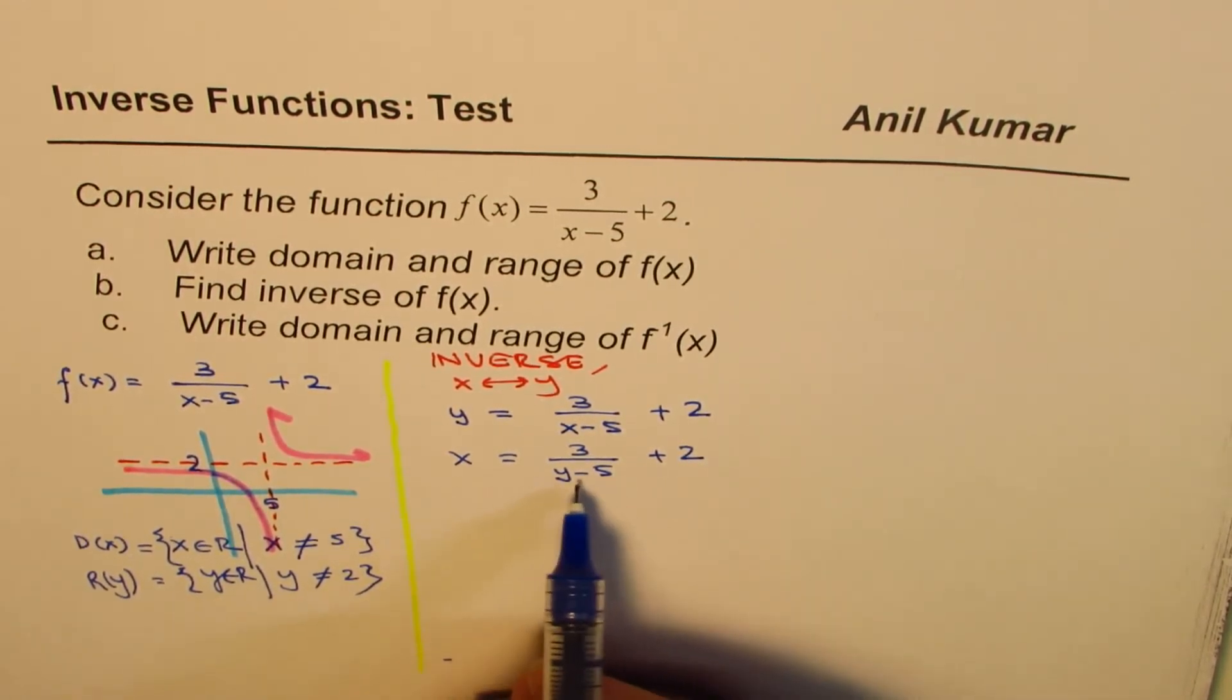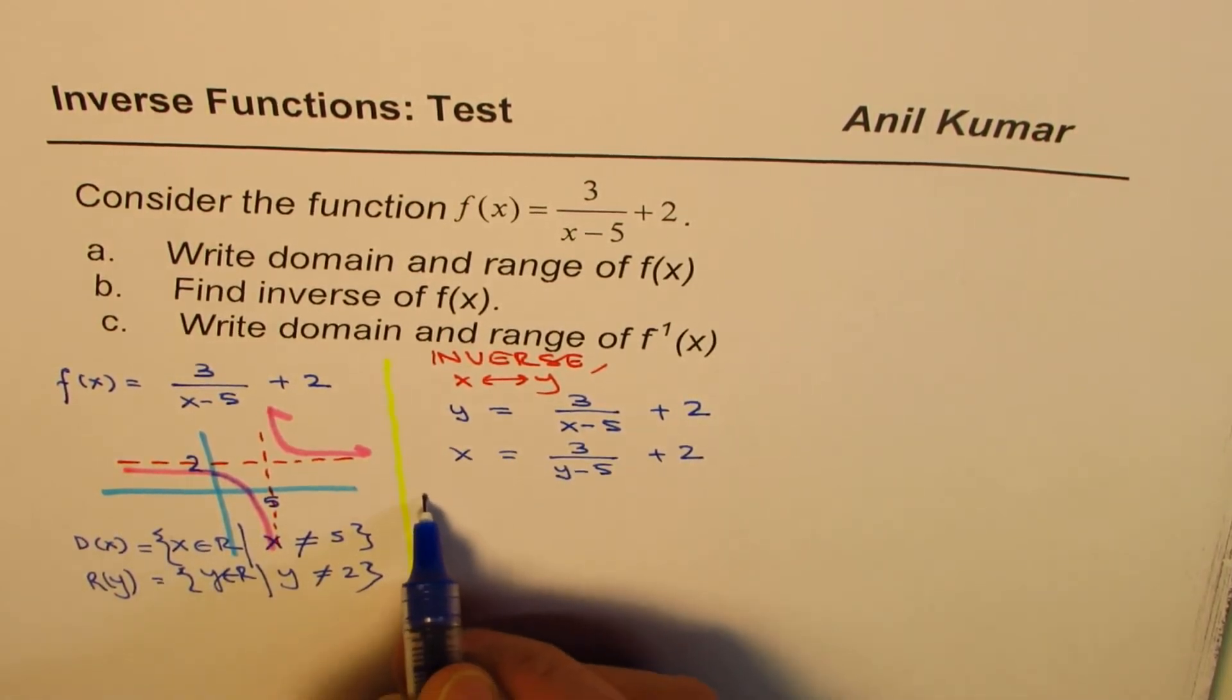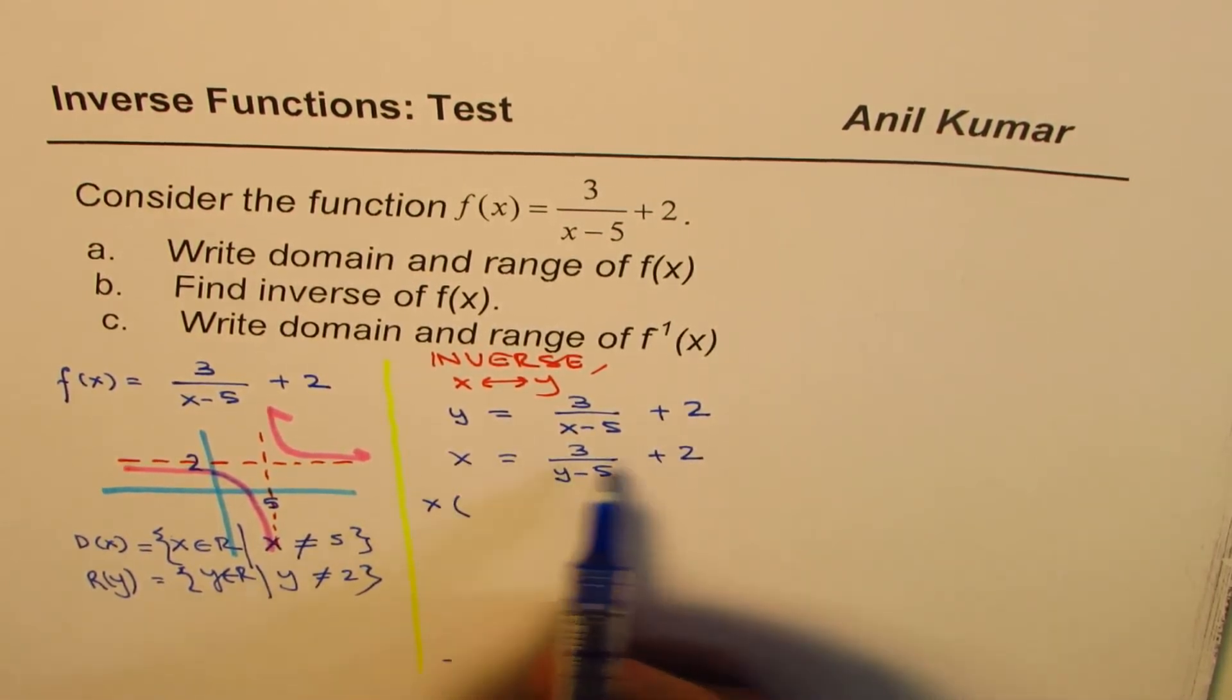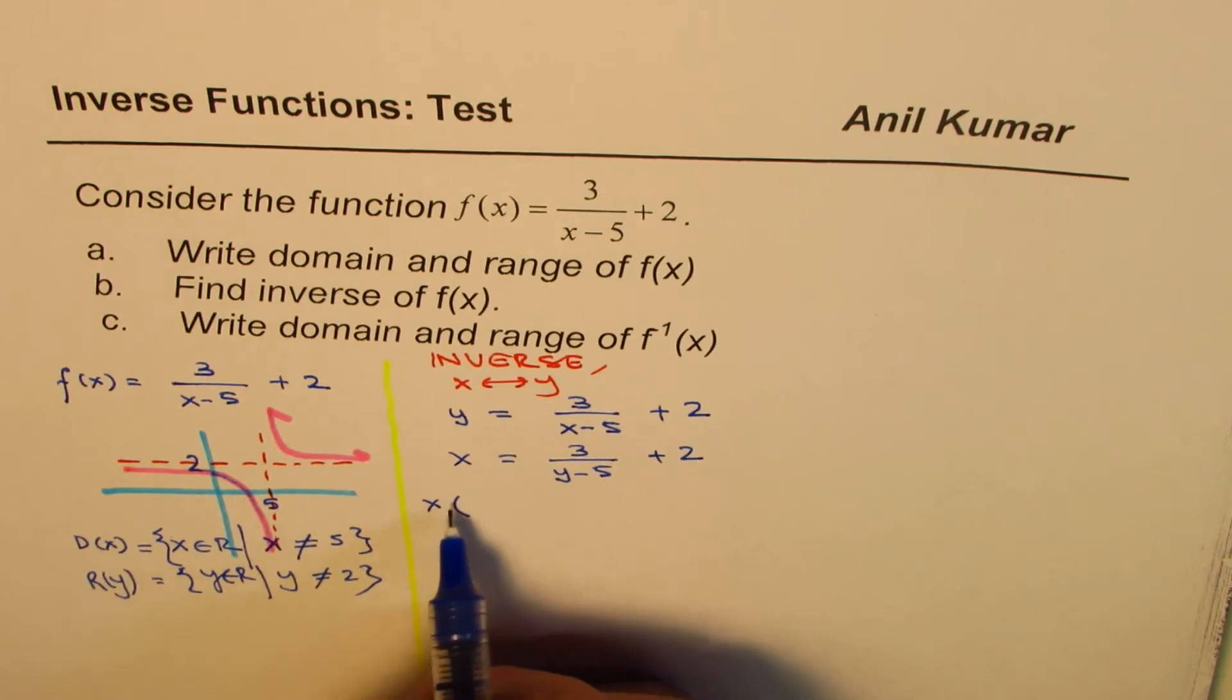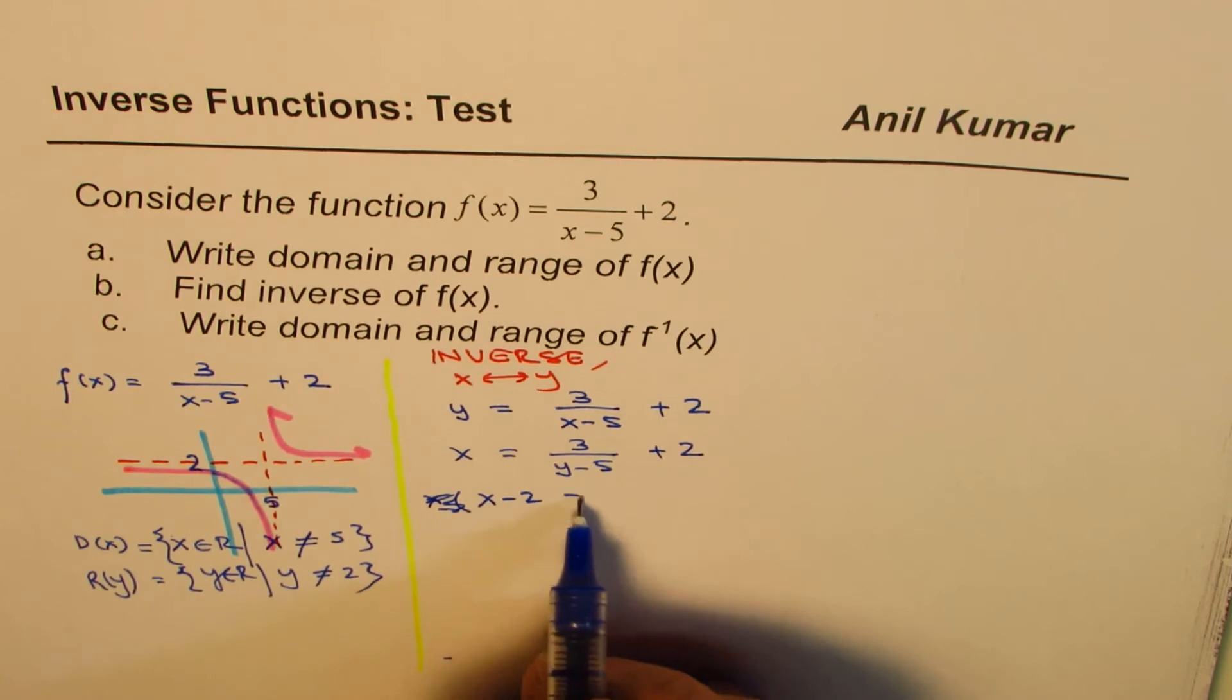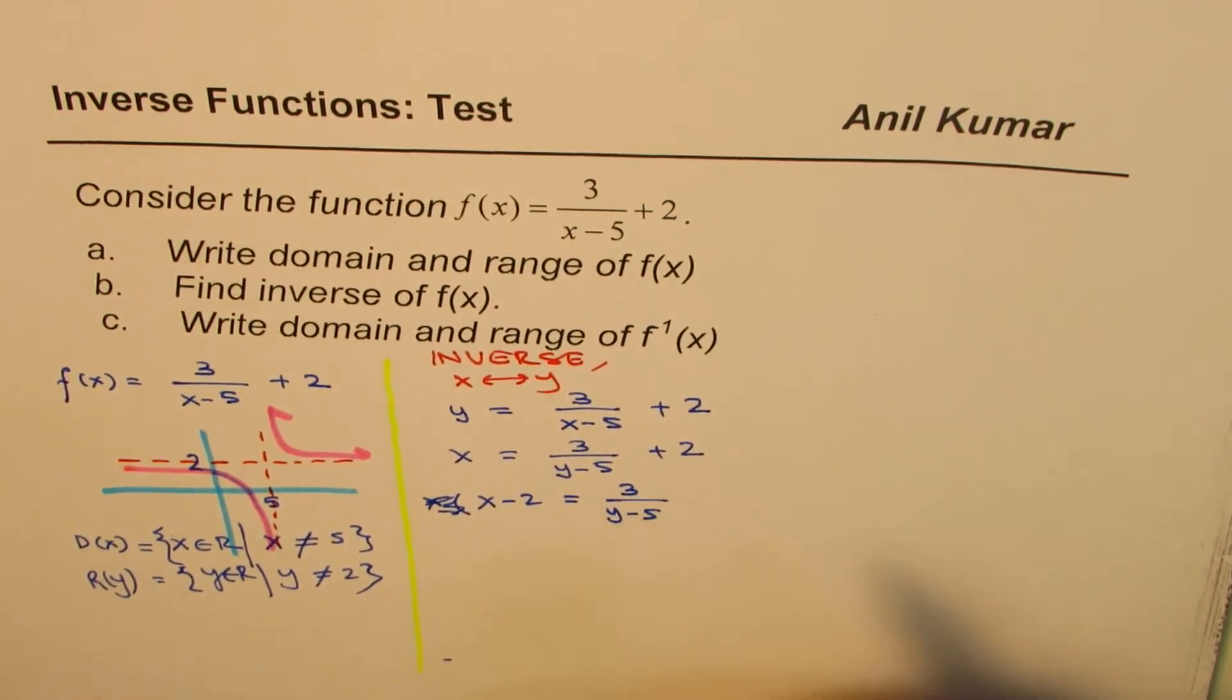To isolate y, we should multiply by this term. All these terms. So what we get here is x times, or what you can do is, you do x minus 2 and then bring it down. You can do that also. So let's do that part. So we'll do it a different way. So we'll do x minus 2 equals to 3 over y minus 5. Let's do like this.